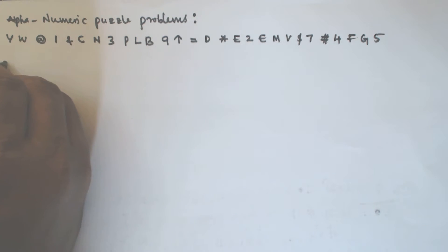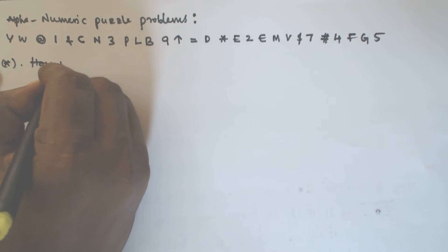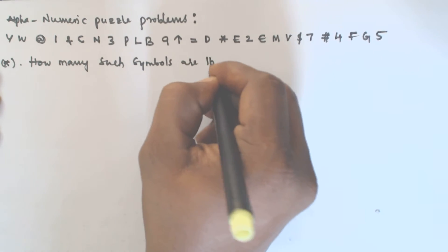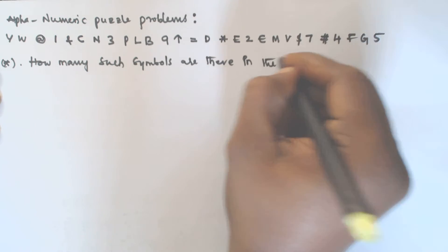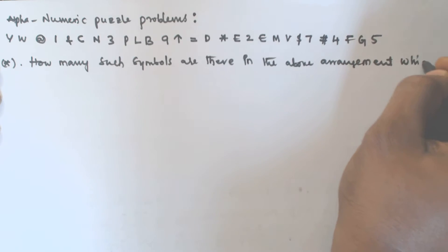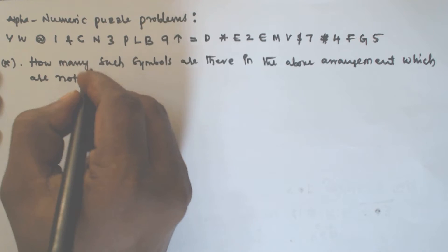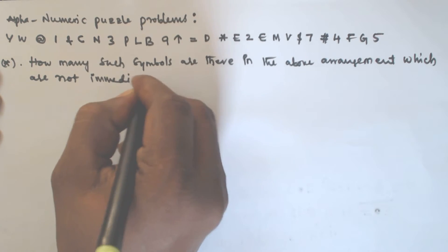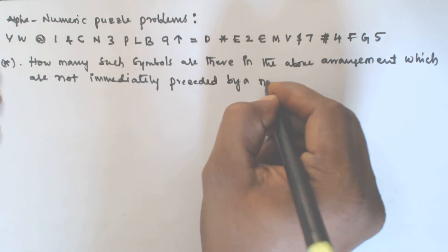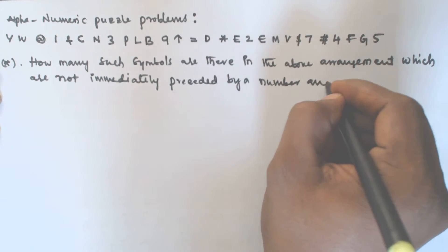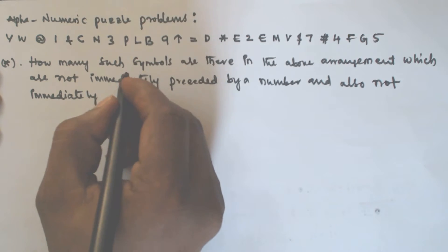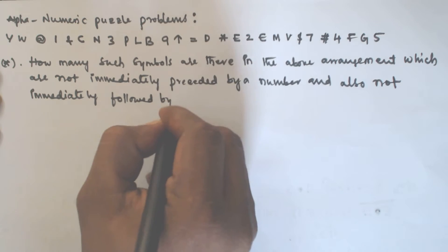Based on this sequence, we have to solve two questions. The first question is: how many such symbols are there in the above arrangement which are not immediately preceded by a number and also not immediately followed by a letter?